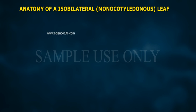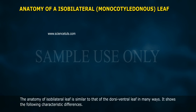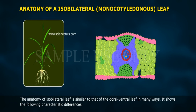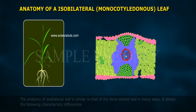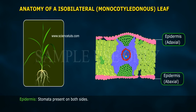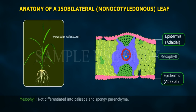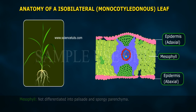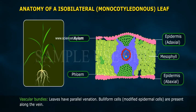Anatomy of an isobilateral monocotyledonous leaf. The anatomy of the isobilateral leaf is similar to that of the dorsiventral leaf in many ways, with the following characteristic differences: stomata are present on both sides; mesophyll is not differentiated into palisade and spongy parenchyma; vascular bundles show parallel venation; and bulliform cells — modified epidermal cells — are present along the long veins.